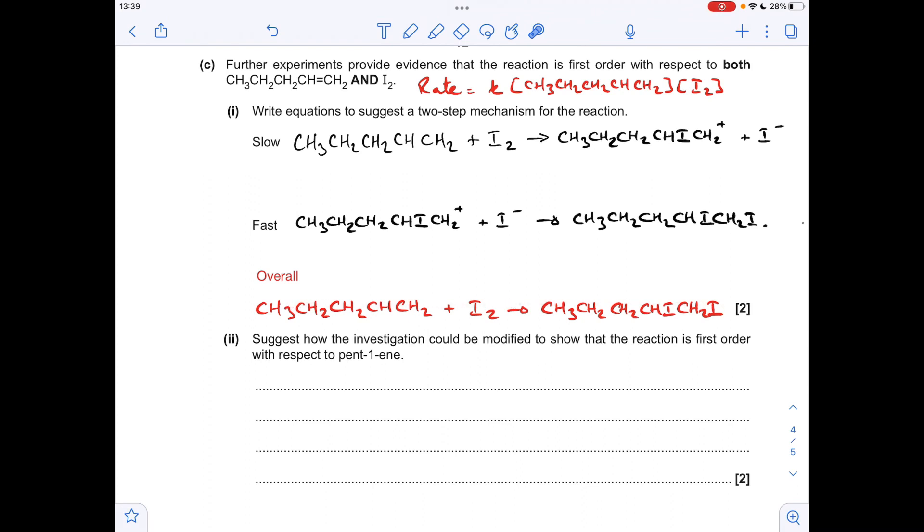And just to finish off, so it's asking how could we modify the investigation to show that reaction is first order with respect to pent-1-ene, the other reactant. Basically we do the same as the first experiment, but the other way around. So in other words, repeat the experiment, but with the iodine concentration constant or in large excess, and then we'd monitor the change in the pent-1-ene concentration over time.